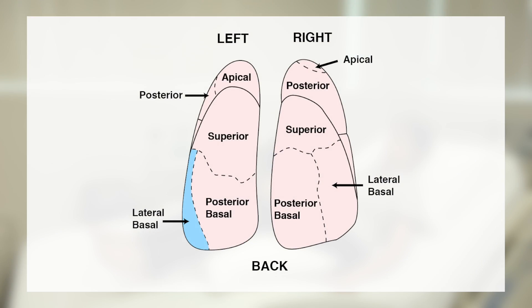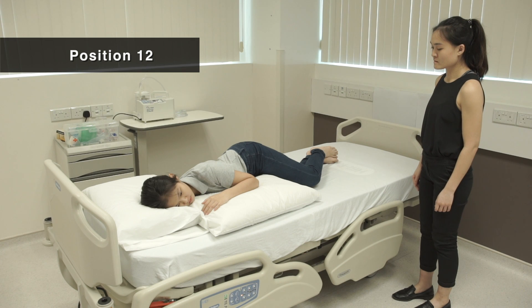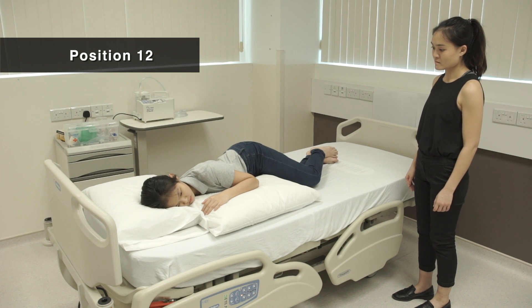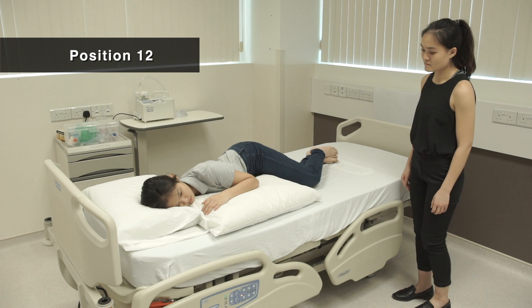Position 12 is for the lower back portion of the left lungs. Lie on the right side with knees bent. Place a pillow under the chest. Rotate the body slightly forward.